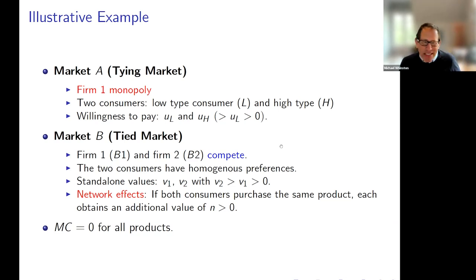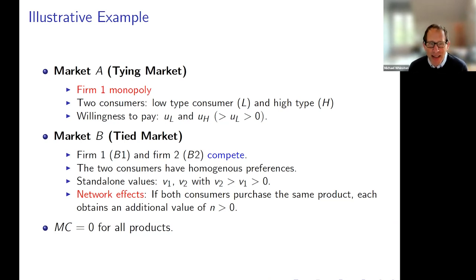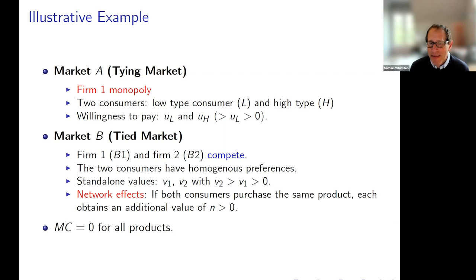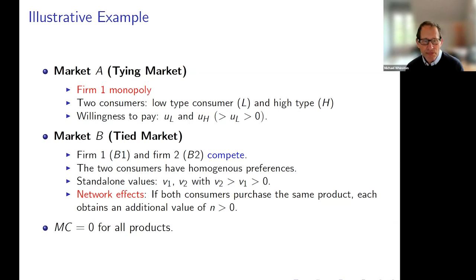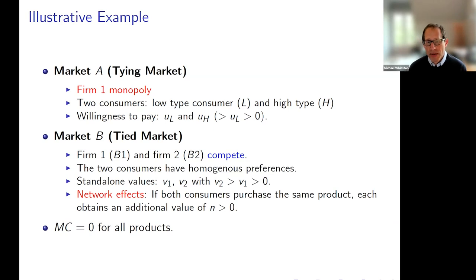Here's the example. We have two markets A and B. A is the tying market — firm one has a monopoly in A. There are two consumers: a low-type consumer and a high-type consumer, and the difference between them is their willingness to pay for product A. U_H is the high-type utility — willingness to pay — which exceeds the low-type consumer's willingness to pay U_L. In market B, which is the tied market, we have two firms who compete.